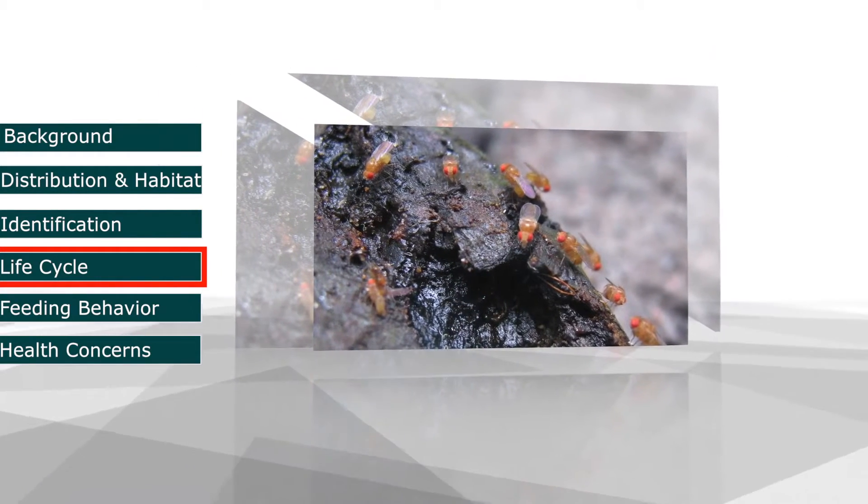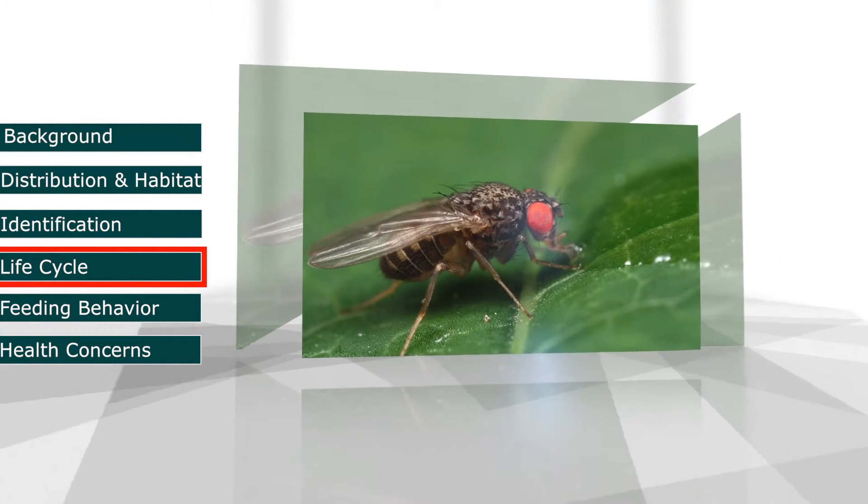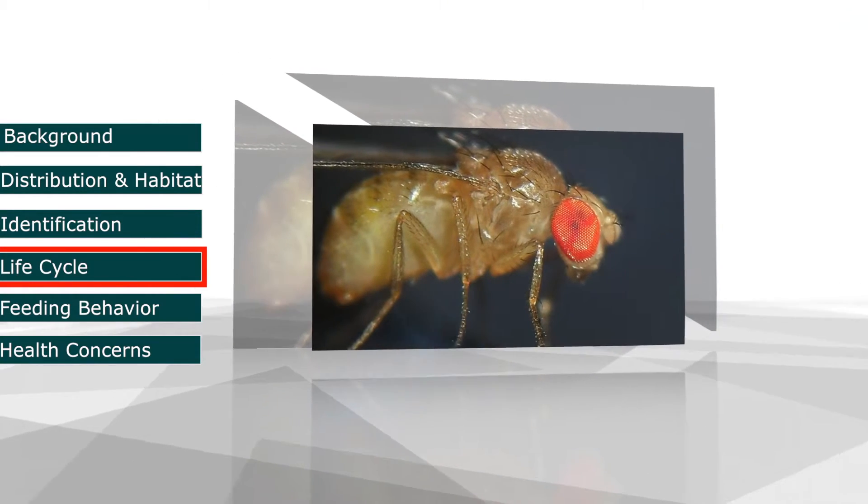From egg to adult, it can take 3 to 4 weeks depending on environmental conditions. Females are able to mate 8 to 12 hours after emerging as adults. Adults can survive up to 1 year.